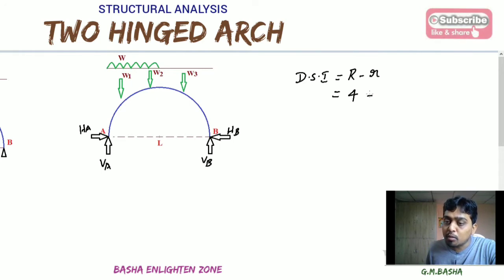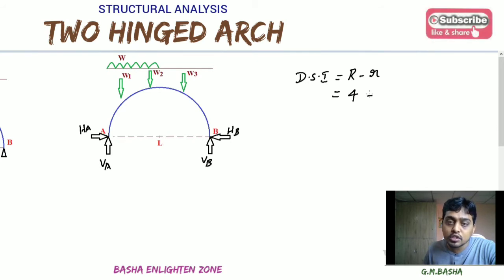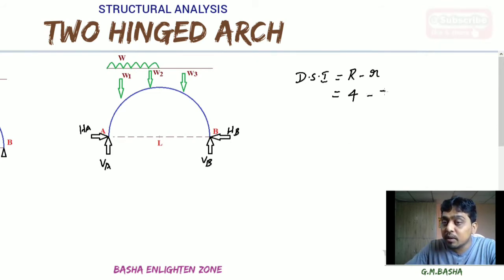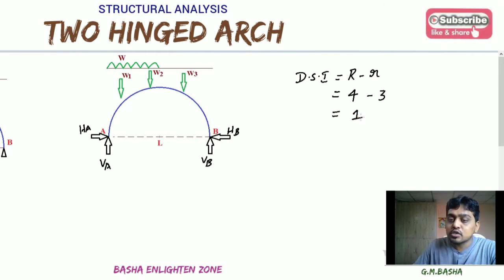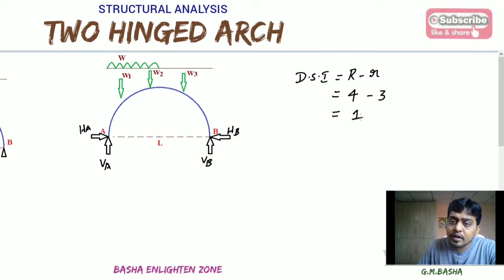What about the available equilibrium equations? Sigma H = 0, Sigma V = 0, Sigma M = 0 — therefore 3 available equilibrium equations. Degree of static indeterminacy equals reactions minus available equilibrium equations, which gives 4 minus 3 = 1. So two-hinged arches have a degree of indeterminacy equal to 1.